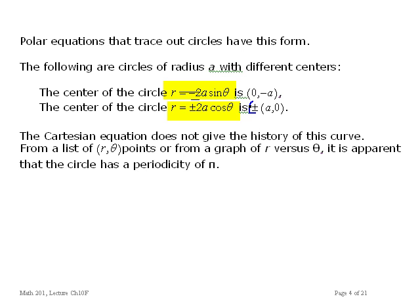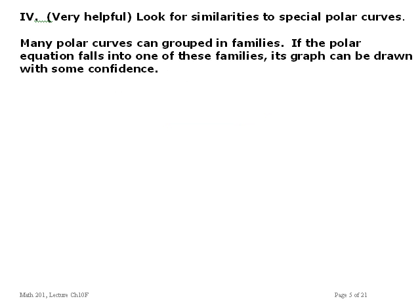Remember, the Cartesian equation doesn't give the time history of the curve. When you just look at it, you can't tell how it was traversed. However, if you pay attention to the r and theta form, you can draw arrows on the curve and show it — I'll have an example of that in a few slides. What I showed in that third method actually leads to a very helpful method, which I'm calling method number four: look at the polar equation and see if it corresponds to one of the classical polar equation forms.